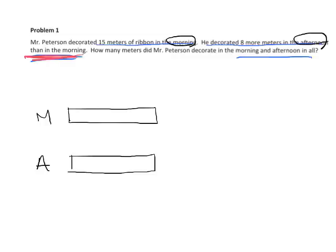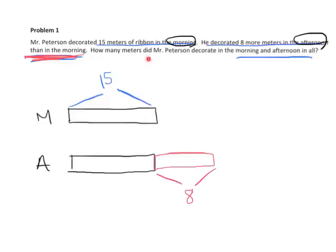And if we can label it, let's label it. So it says, Mr. Peterson decorated 15 meters of ribbon in the morning. So that means we can label the morning is 15. And then it says, he decorated eight more meters in the afternoon than in the morning. So what that means is his afternoon, that tape diagram has to be bigger by eight. So that's what I'm going to draw right there. Now, the last important thing is how many meters did Mr. Peterson decorate in the morning and afternoon? So essentially, they're asking us, how much did he do in all? So that's the classic tape diagram right here. And now we're going to leave it up to the students to figure out how to solve this problem.